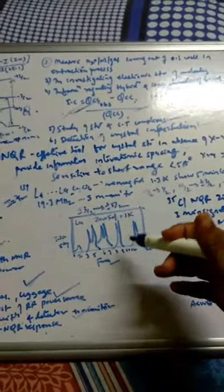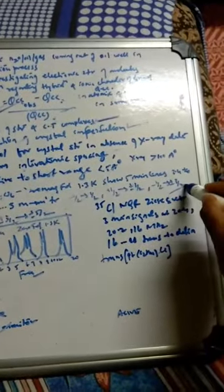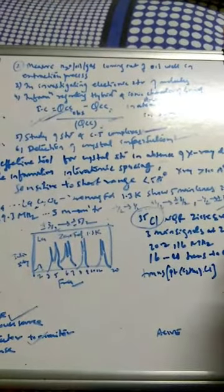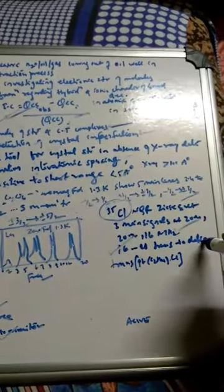Another example is Zeise's salt — a platinum-ethylene-chloride complex — studied using chlorine-35 NQR. It shows three main signals at approximately 20.4, 20.2, and 16 MHz. The 16 MHz absorption indicates that the chlorine is trans to the olefinic compound, demonstrating how NQR helps determine molecular structure in solids and drugs.